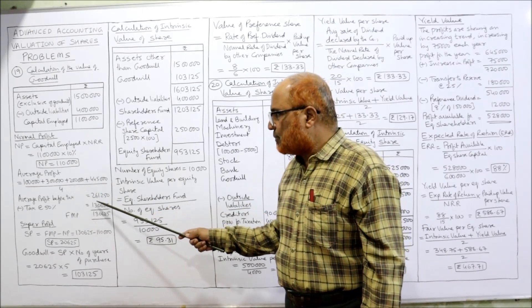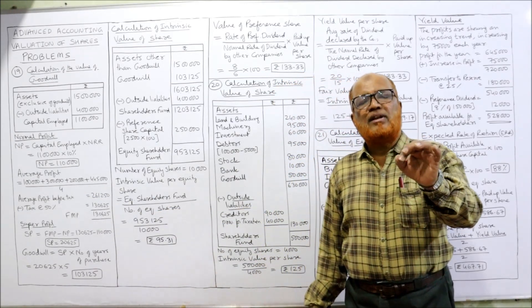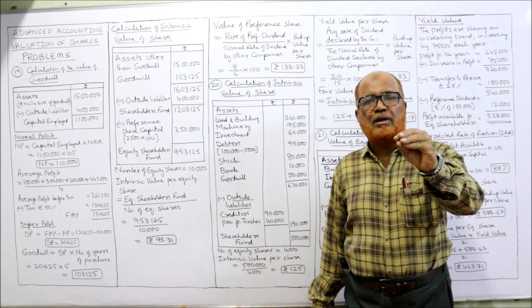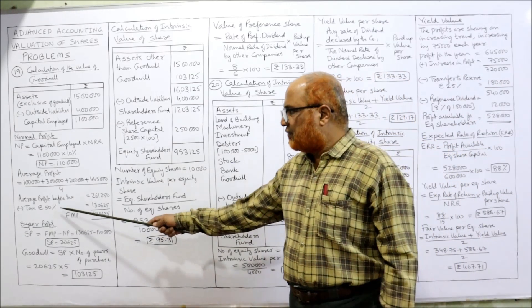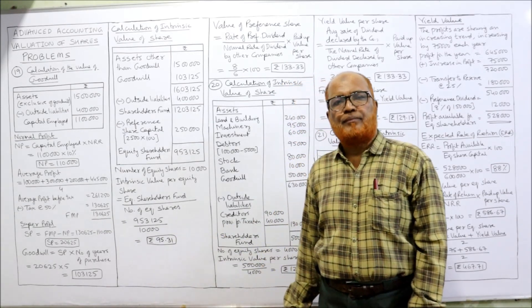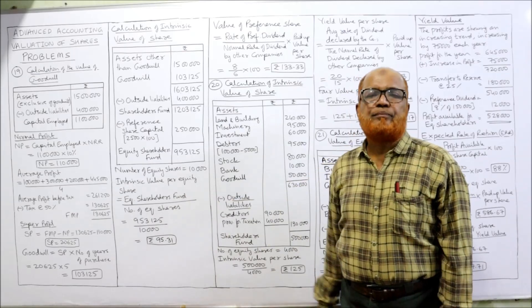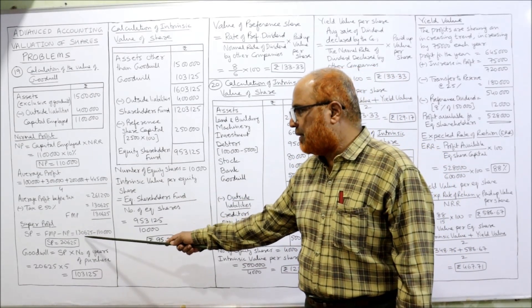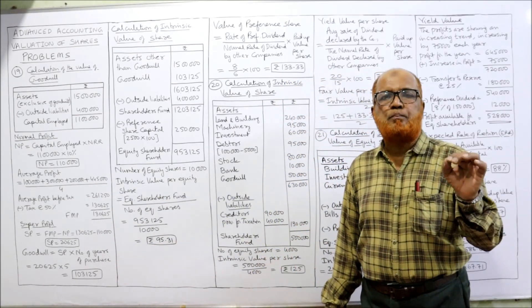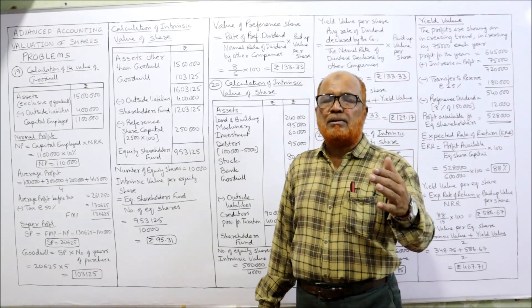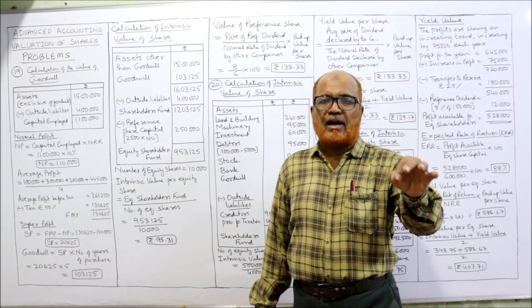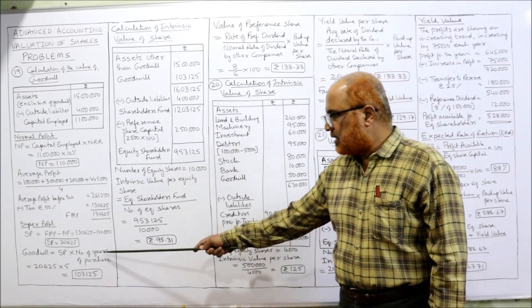The average profit of the four years is ₹2 lakh 61,250. Tax rate is 50%, so after deducting 50% tax, the Future Maintainable Profit (FMP) is ₹1 lakh 30,625. Super profit = FMP − NP = ₹1,30,625 − ₹1,10,000 = ₹20,625. Multiply super profit by 5 years of purchase: goodwill = ₹1,03,125.